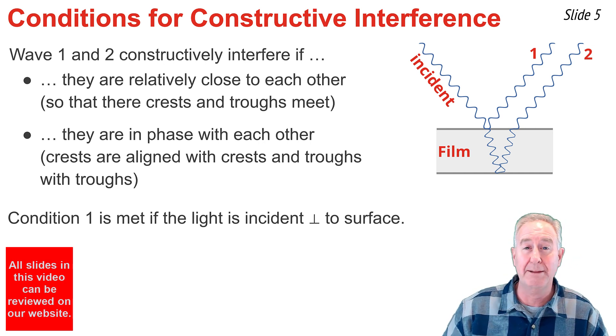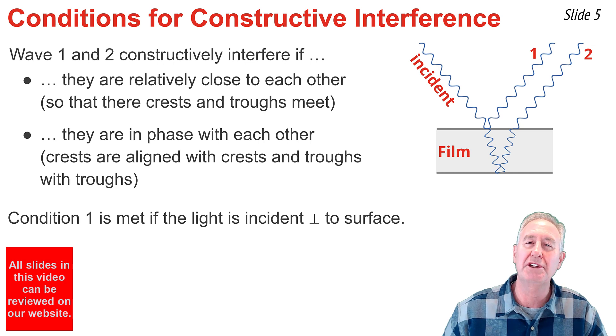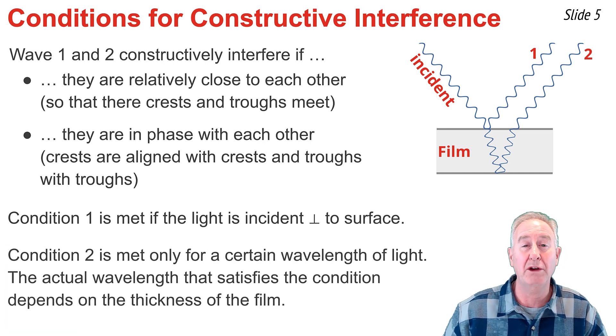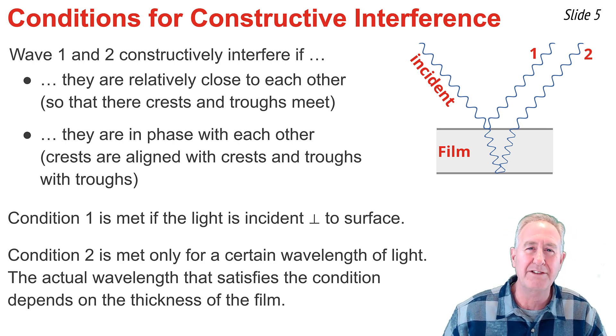Now, I've not shown that in my diagrams, because if I did, all the waves would be on top of one another, and we wouldn't be able to distinguish between any of the waves. The second condition is met only for certain wavelengths of light from amongst the wavelengths that approach the top surface. As we will see, the wavelength and therefore the color that is reinforced by constructive interference is dependent upon the thickness of the film.